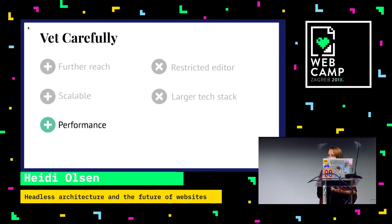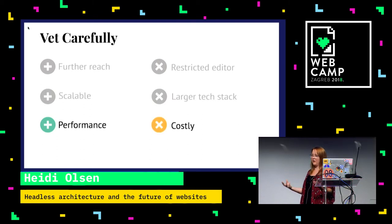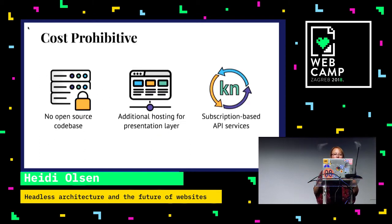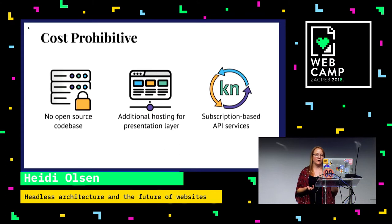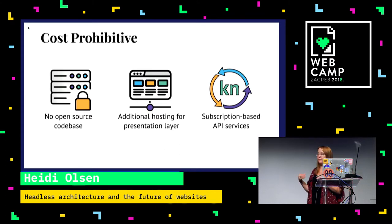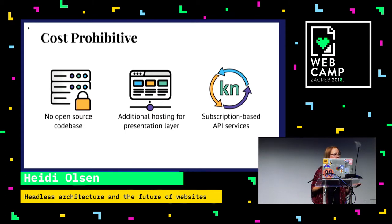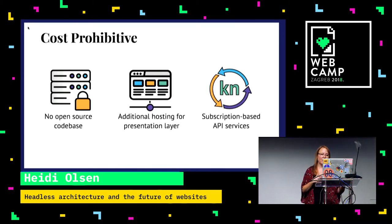Lastly, while it is a lot more performant and faster, these kinds of architectures can be a lot costlier. There's no open source code base you can just download and use. Usually you're paying for a subscription-based API service monthly or yearly. A word of advice: a lot of times they'll start you off with a really affordable plan, and then a year later they raise the price to an extreme amount and you're already stuck — and they know that. You also have additional hosting for the presentation layer.